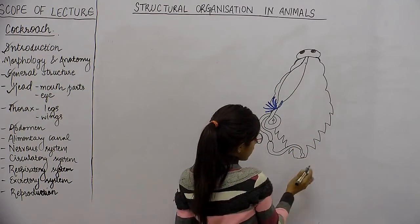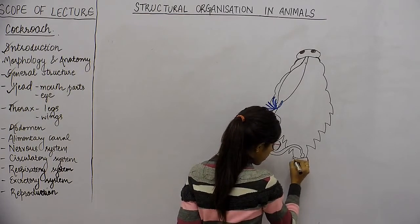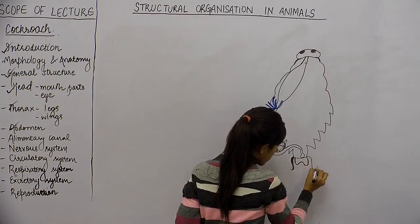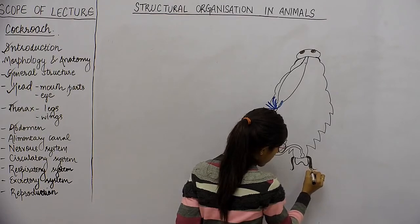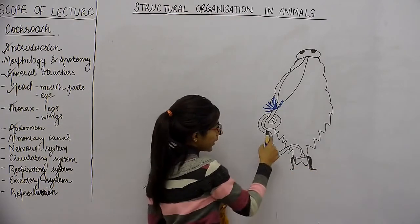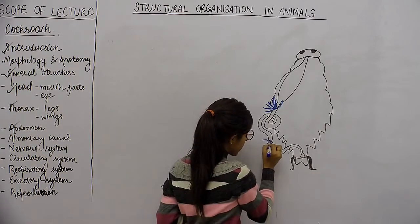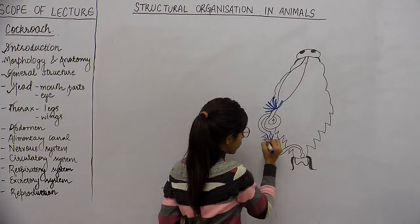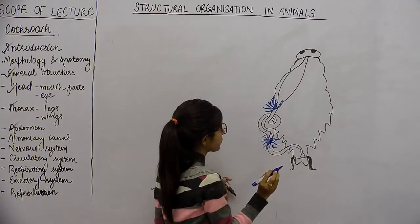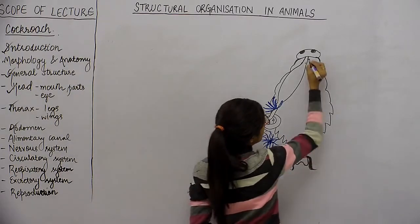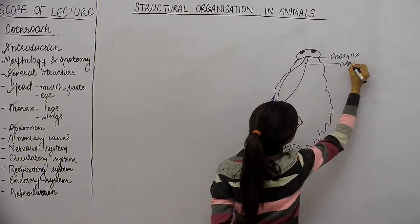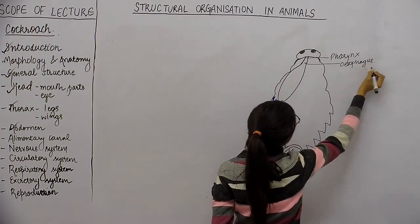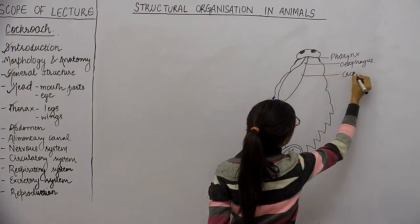This is how a cockroach looks like — yeh iska 10th segment aur anal cerci present hai. Yeh jo midgut aur hindgut ka junction hai, yahan pe bhi kaafi saray thin filaments present hote hain — these are the malpighian tubules. Now let's start with the labeling: this is pharynx, pharynx ke neche is esophagus, this is crop and this is gizzard.